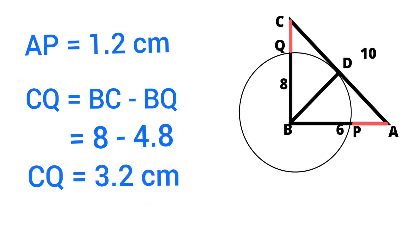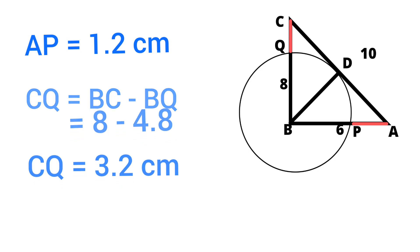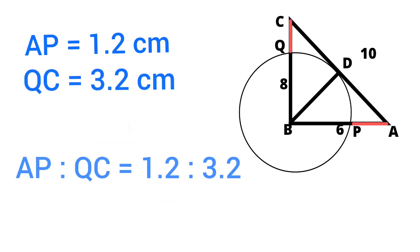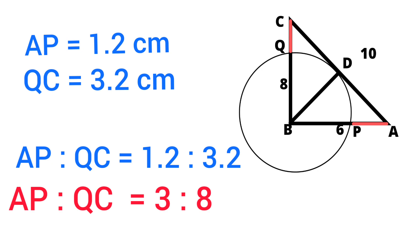Now AP is to QC equals 1.2 is to 3.2. For simplification, we can write AP is to QC equals 3 is to 8. That is the ratio of AP and QC.